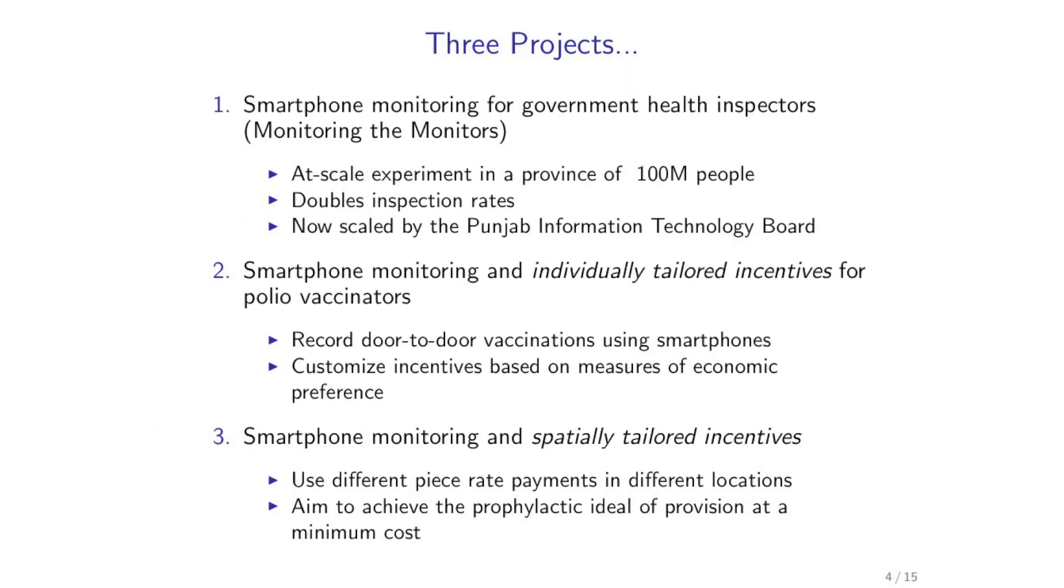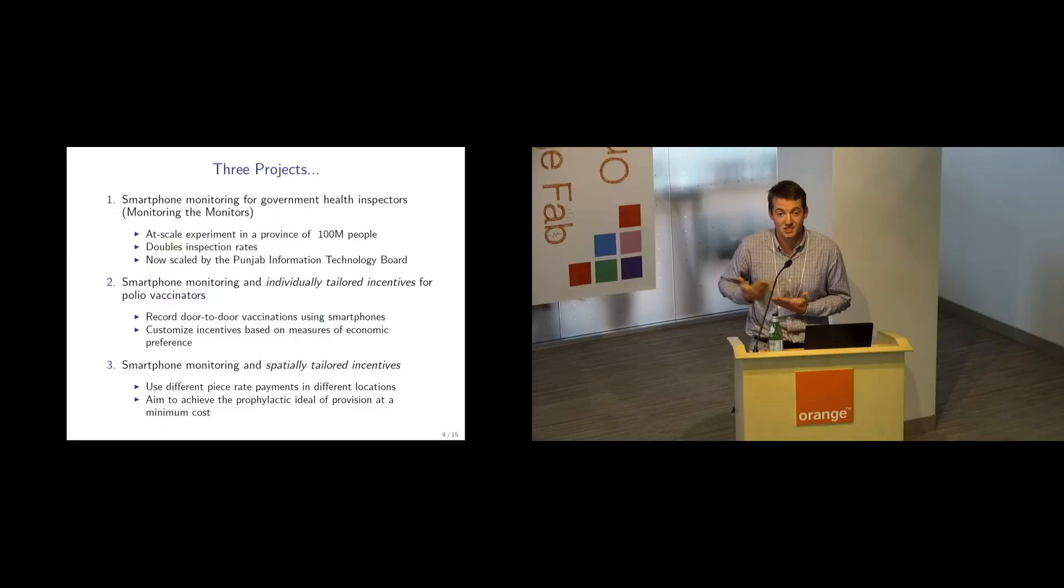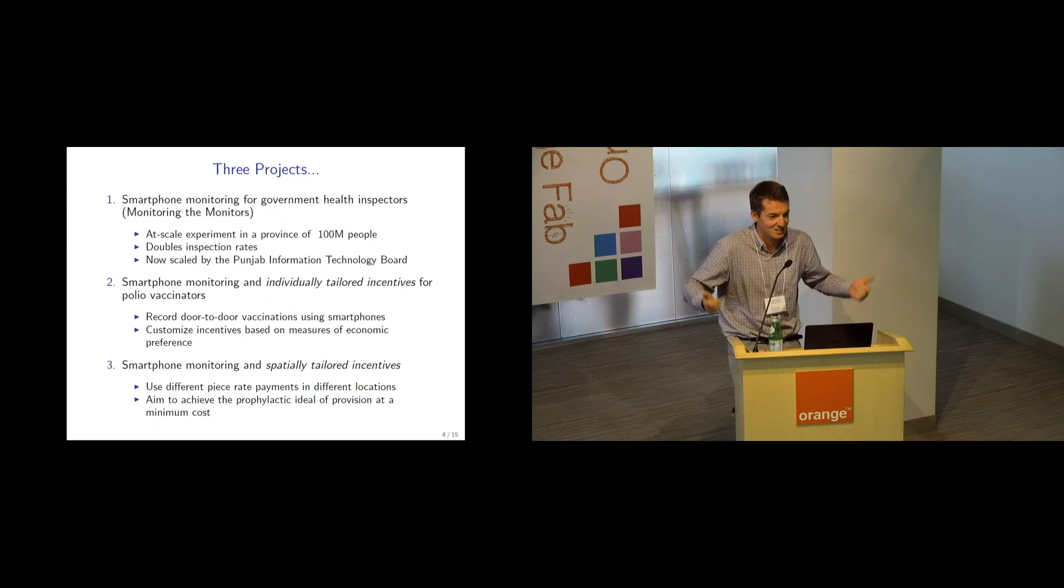The hard part was to say we want to now also write an individualized contract based on some sort of principled measurement of who you are and how you act in government. And then the final project, which is really more a project in principle than a project in fact, is—Umar put up these maps showing that the real question with polio vaccination is the spatial coverage of vaccine. If you're going to eradicate a disease, you need to get comprehensive spatial coverage.